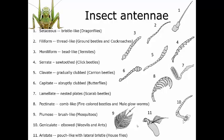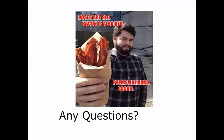Geniculate antennae, found in weevils and ants, are elbowed — they have an almost right-angle bend partway through. Finally, aristate antennae look a bit unusual: they have a large pouch with a small bristle coming off the middle of that pouch. These are found in true flies like blowflies or flesh flies. That covers the major sensory input organs of the head. Up next, we'll start talking about the mouth parts — let me know if you have any questions.